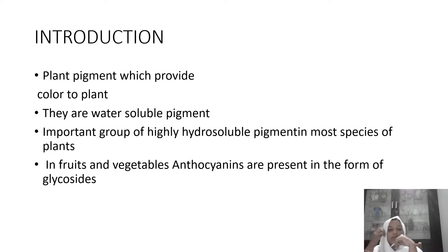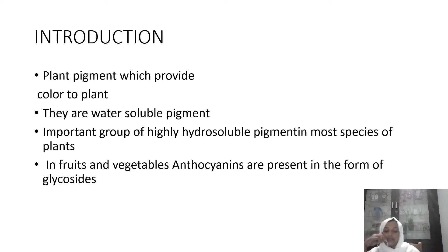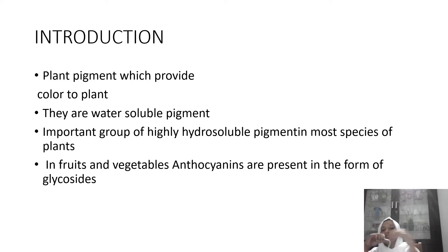Anthocyanins are an important group of highly water-soluble pigments present in most species of plants, fruits and vegetables. They are present in the form of glycosides.